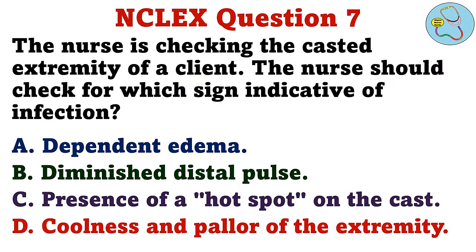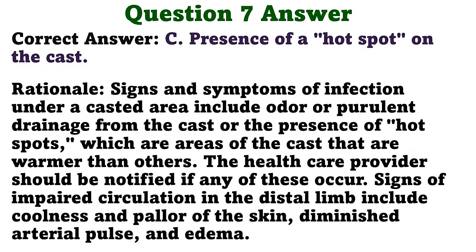The nurse is checking the casted extremity of a client. The nurse should check for which sign indicative of infection? A. Dependent edema. B. Diminished distal pulse. C. Presence of a hot spot on the cast. D. Coolness and pallor of the extremity. The correct answer is C: presence of a hot spot on the cast. Signs and symptoms of infection under a casted area include odor or purulent drainage from the cast, or the presence of hot spots, which are areas of the cast that are warmer than others. The health care provider should be notified if any of these occur. Signs of impaired circulation in the distal limb include coolness and pallor of the skin, diminished arterial pulse, and edema.